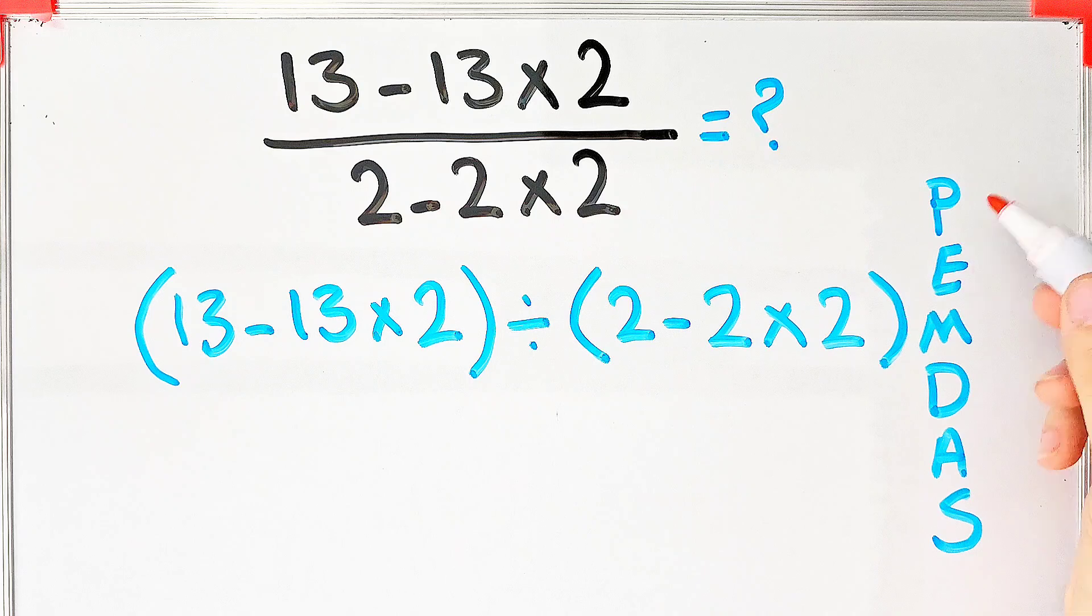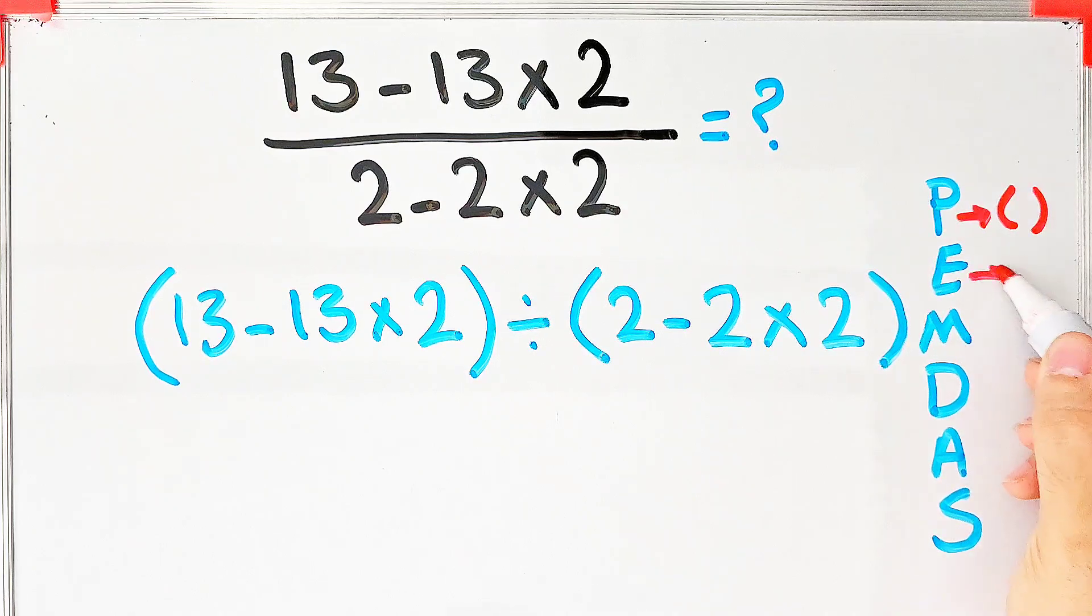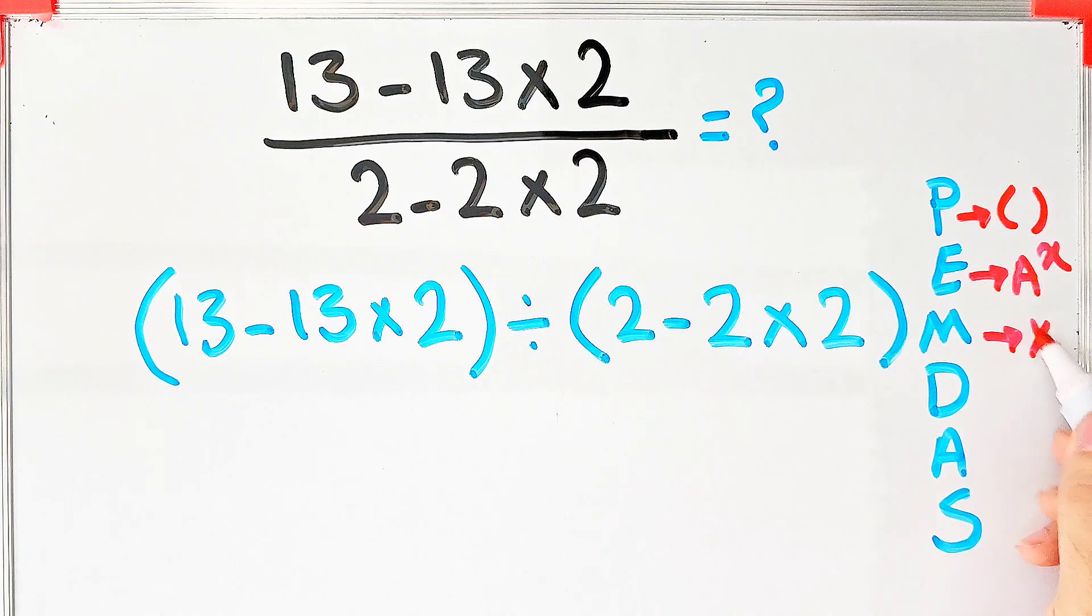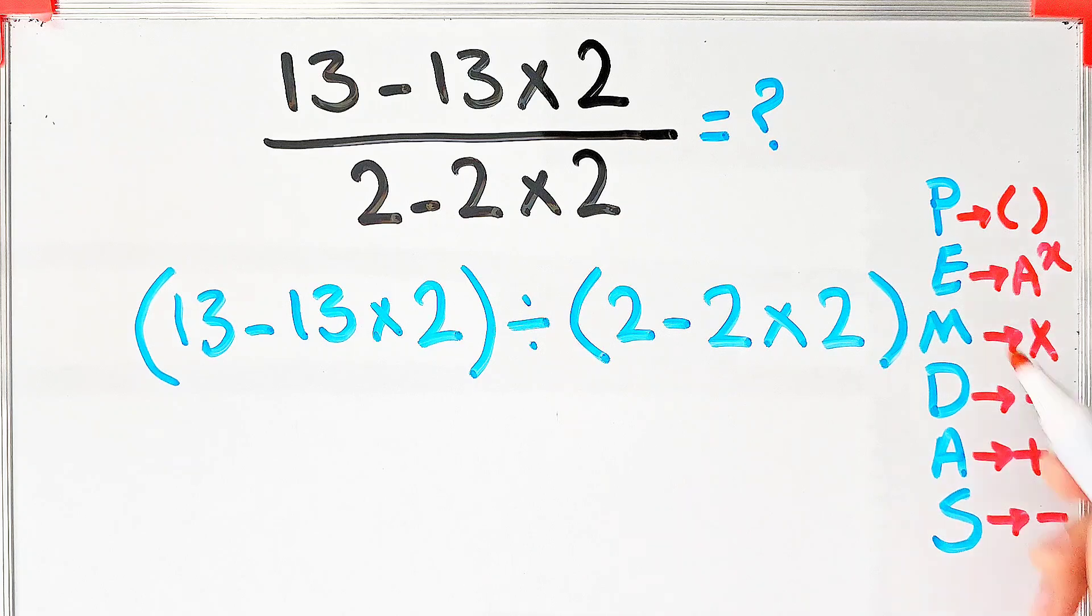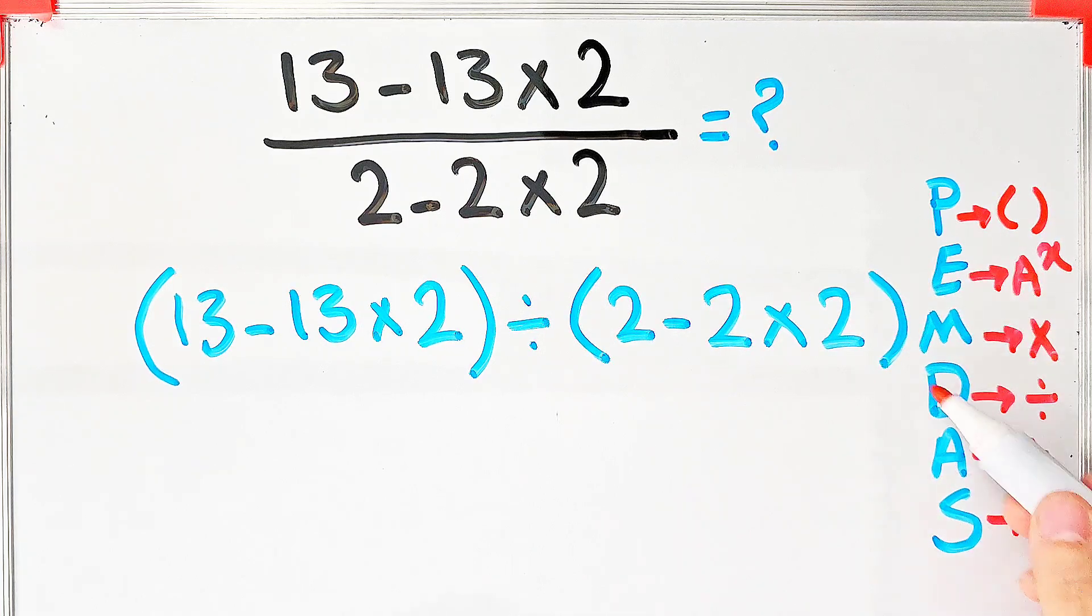In this rule, P stands for Parentheses, E stands for Exponent, M stands for Multiplication, D stands for Division, A stands for Addition, and S stands for Subtraction. Multiplication and division have the same level of priority. Also, addition and subtraction have the same priority.